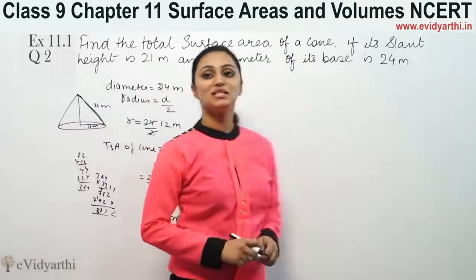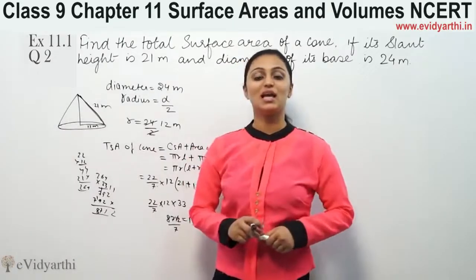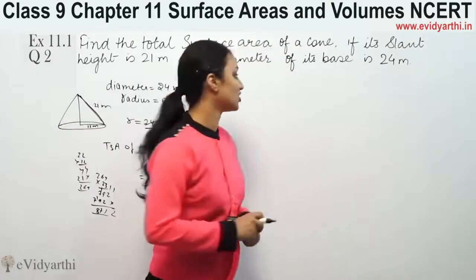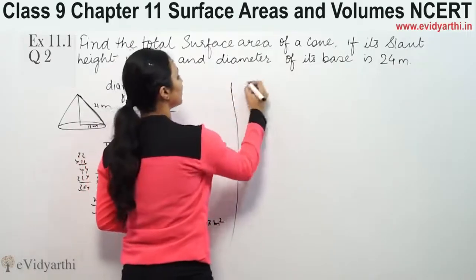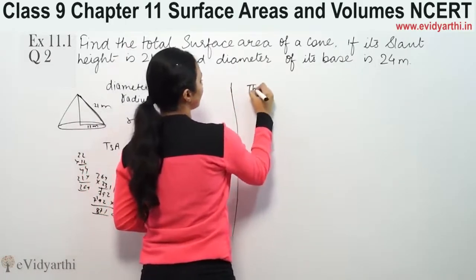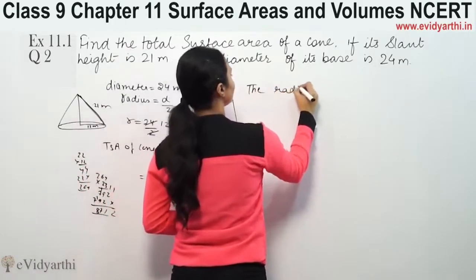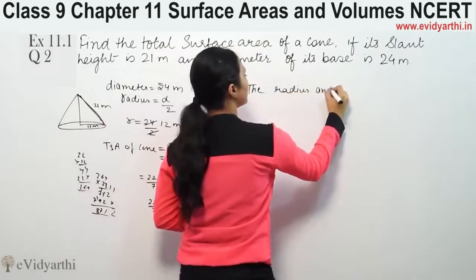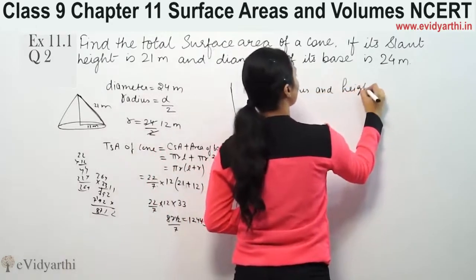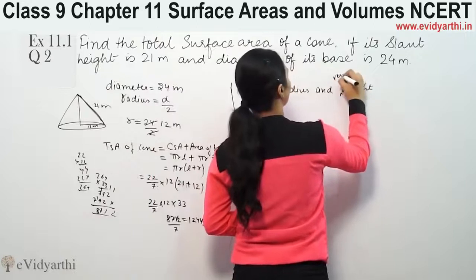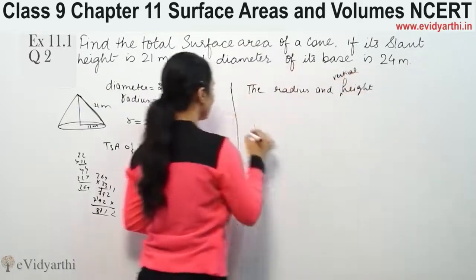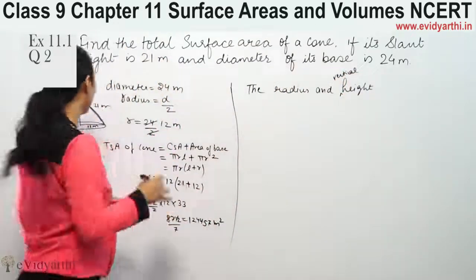So this was question number 2 from Exercise 13.3, and now it's your turn to solve a question. Suppose the radius and slant height of a right circular cone is 3 cm and 5 cm respectively, find its curved surface area.